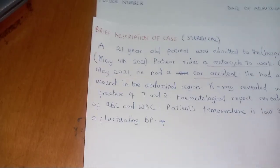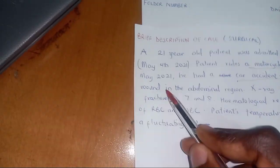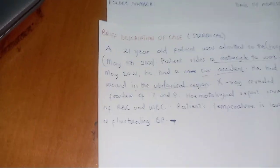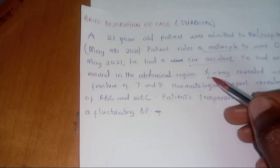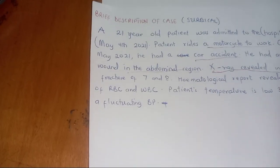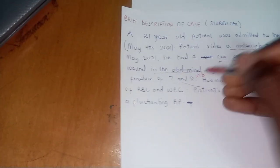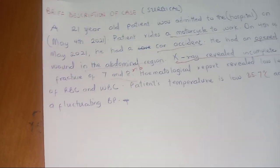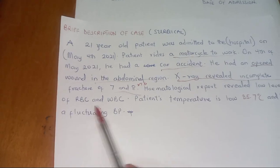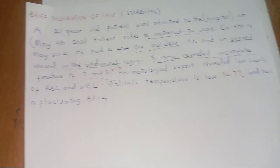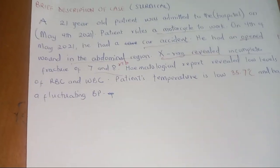He had an open wound. Upon assessment, there was an open wound at the abdominal region. The x-ray was able to reveal an incomplete fracture of the 7th and 8th rib. Hematological reports revealed low levels of RBCs and WBCs. Now for the vital signs — the patient's temperature is low.